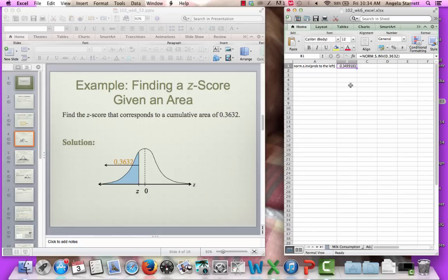Does it make sense that it's negative? It better make sense to you that it's negative because we're to the left of the mean, which is 0. We're working with the standard normal distribution here. Our mean is 0. We can see by our graph here that z is to the left of the mean. The probability is less than 50%, so we're expecting a negative z-score. And it just so happens when we put in 0.3632 into our norm.s.inv function, we get a negative z-score of 0.35.